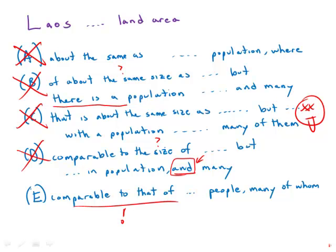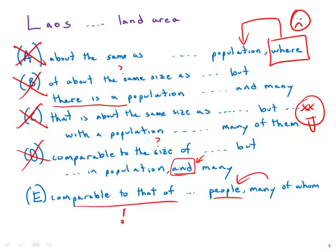So D is not quite right. That leaves us with E, with the perfect comparison 'comparable to that of Great Britain,' and then the lovely phrase 'people many of whom' — perfect. Notice another problem with A: it's a classic GMAT mistake — it uses 'where' to refer to a non-place. That's another very common mistake on incorrect sentence correction choices. The best answer by far is answer choice E.